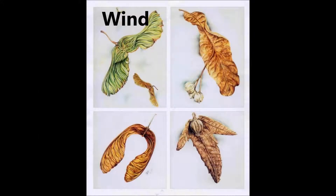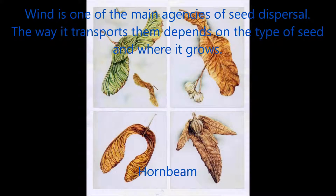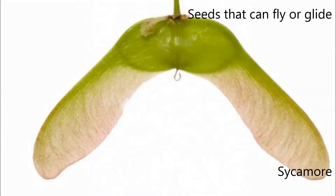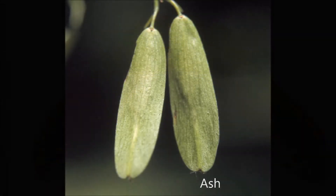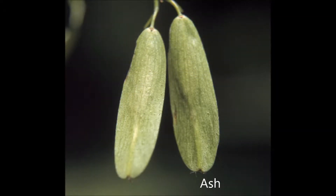Dispersal of Seeds by the Wind. Wind is one of the main agencies of seed dispersal. The way it transports seeds depends on the type of seed and where it grows. Some tall trees produce seeds with stiff wings that enable them to fly long distances. The wings are twisted and balanced so that the seed spins around as it is carried along by the wind. These natural adaptations for using the wind are technically accurate, as the wings of modern planes and helicopters are designed in the same way. Examples of seeds spread by wings include hornbeam, sycamore, and ash.